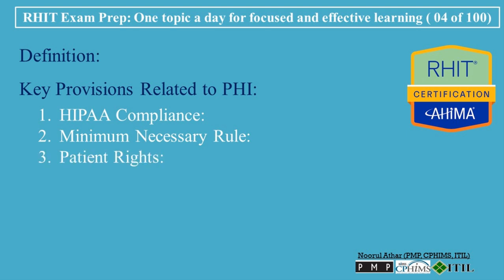3. Patient Rights: Patients have rights regarding their PHI, including the right to access their health records, request corrections, and receive an accounting of disclosures. Health care organizations must inform patients of these rights and provide mechanisms for exercising them.